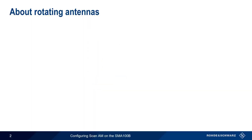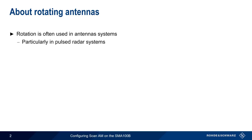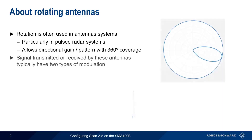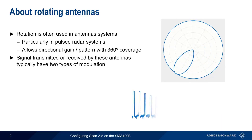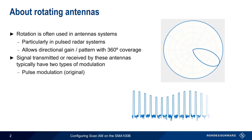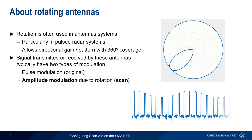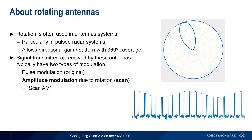Let's start by talking about rotating antennas. Rotation is often used in antenna systems, particularly in the case of pulsed radar systems. This rotation allows a directional antenna pattern to be used, but also allows 360-degree azimuth coverage. The signals transmitted or received by these antennas typically have two different types of modulation: the original pulse modulation, as well as amplitude modulation caused by the rotation or scanning of the antenna. This is therefore often called Scan-AM.